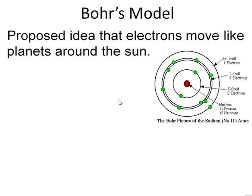He proposed that electrons move around the nucleus like planets around the sun, and that if these are the electrons, the green dots, they'll travel in these circular paths like planets around the sun.